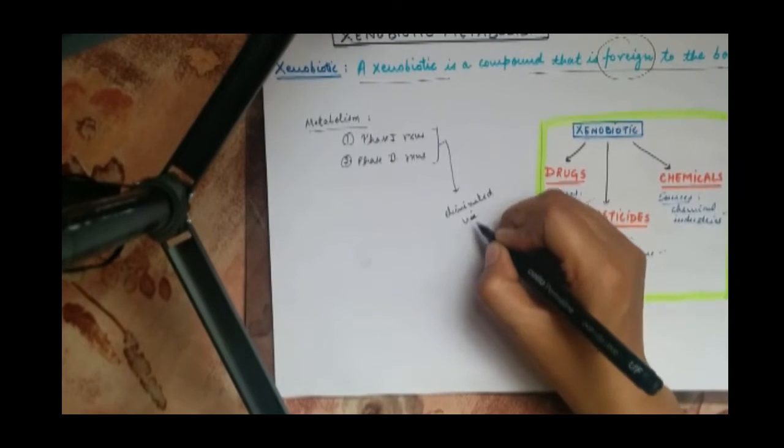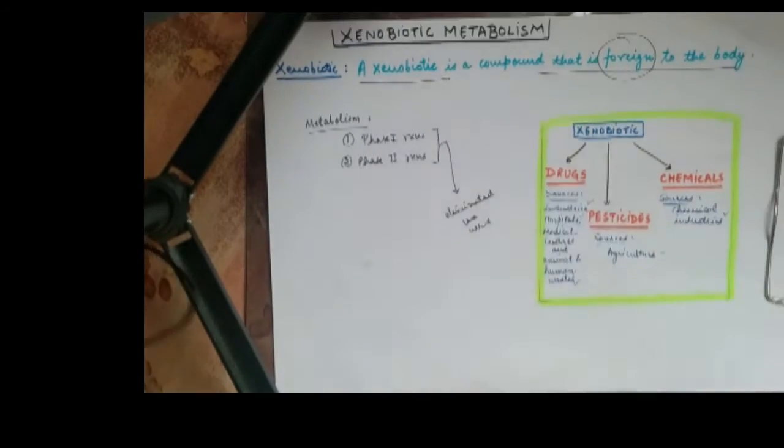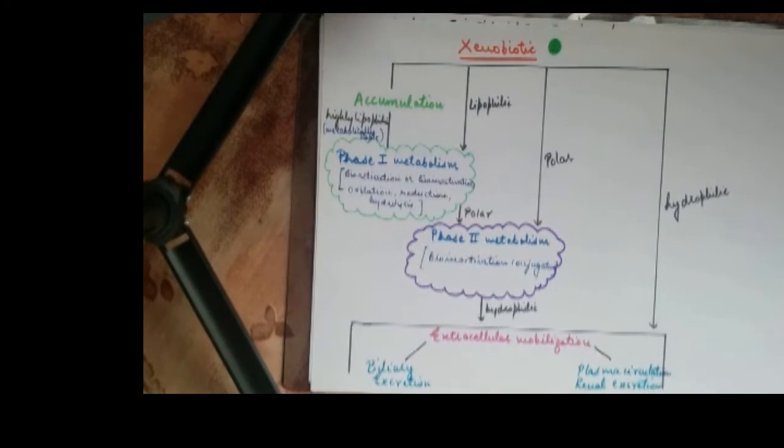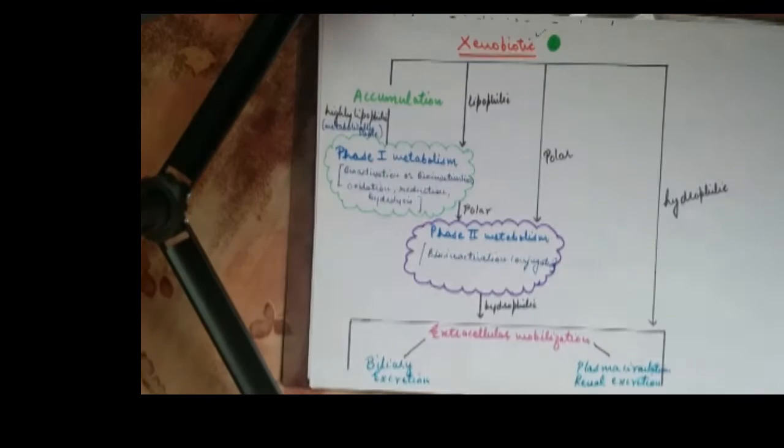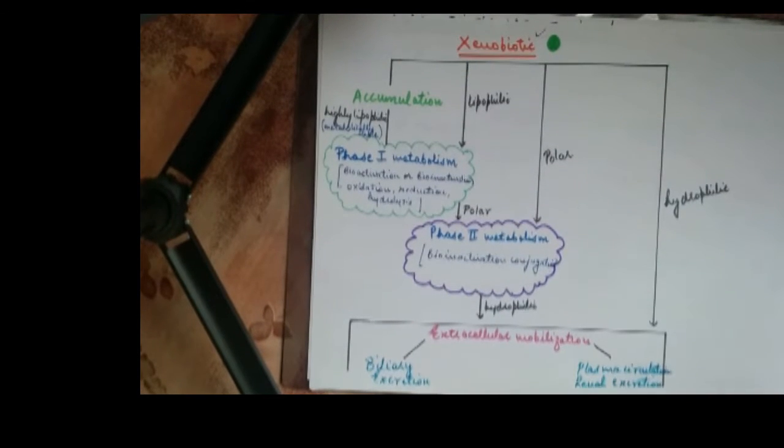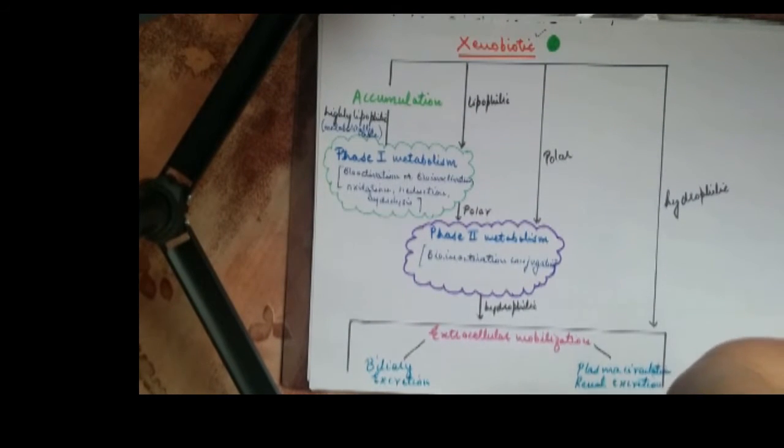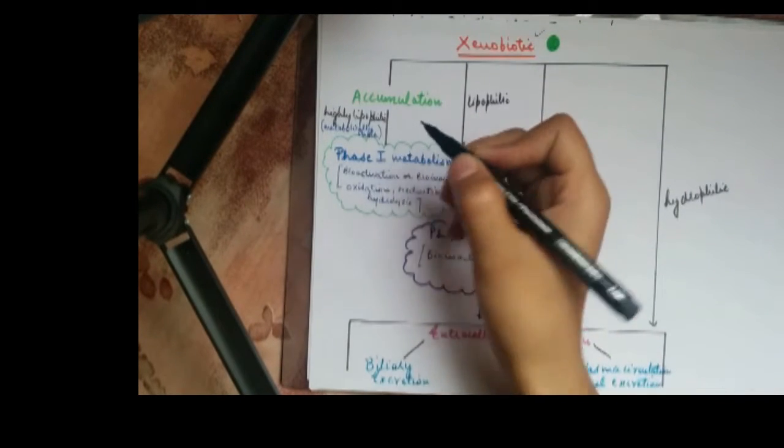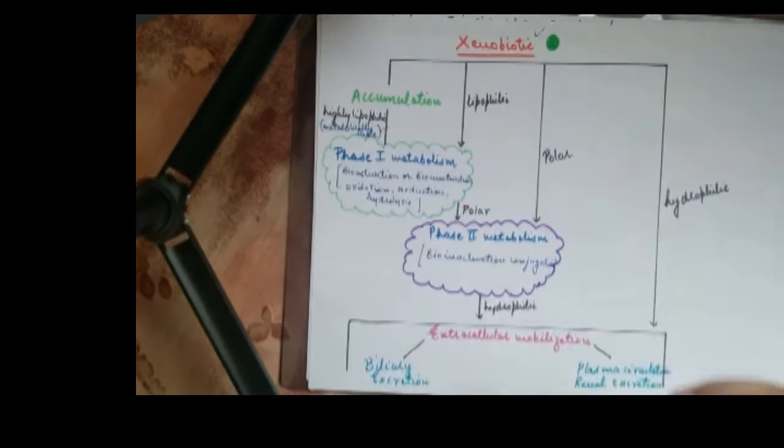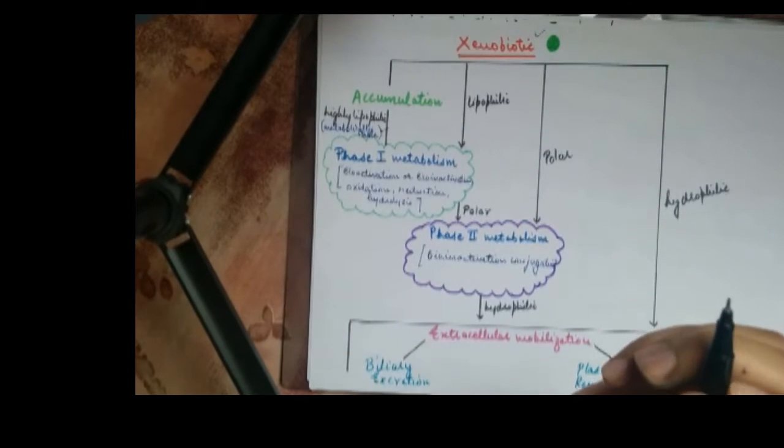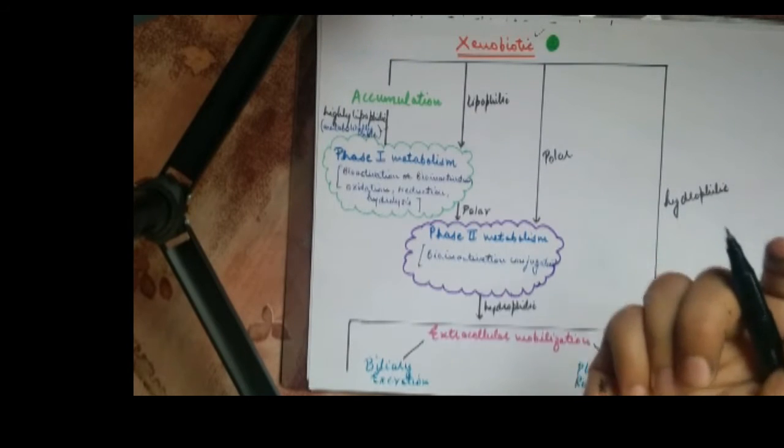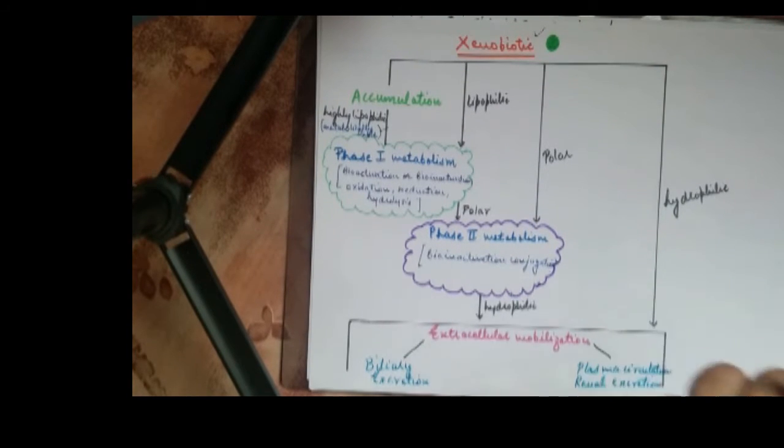Now let's understand this through this figure. Consider here is a xenobiotic getting accumulated somewhere in the body. If this xenobiotic is lipophilic in nature, it is going to be metabolically stable. By this I mean that it would be easy for this xenobiotic to cross the plasma membrane. As you know, our cell membranes are made up of lipids, so it may cross the membrane and enter the cells.